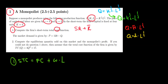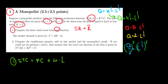Now let's take 2 to the other side to get L in terms of quantity. Q divided by 2 equals L to the power 1/2. We raise both sides to the power of 2 to eliminate that exponent. So Q squared divided by 4 equals L to the power 1 — since 1/2 times 2 equals 1. So L equals Q squared divided by 4.